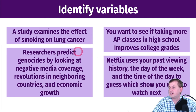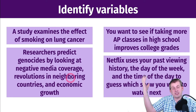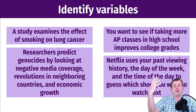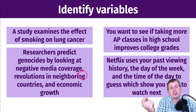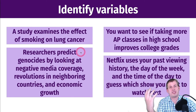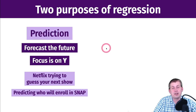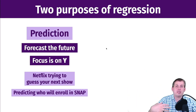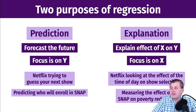Researchers predicting genocides is a predictive question. The United States Holocaust Museum in Washington DC has a whole data science office dedicated to predicting genocide around the world using a fancy predictive model with many explanatory variables. They track how at-risk different countries are for falling into genocide in a specific year — they're not trying to find the causal effect of economic growth on genocide; they're trying to get the most accurate guess of when genocide might happen. That's the predictive world — no causation, just trying to guess the future.